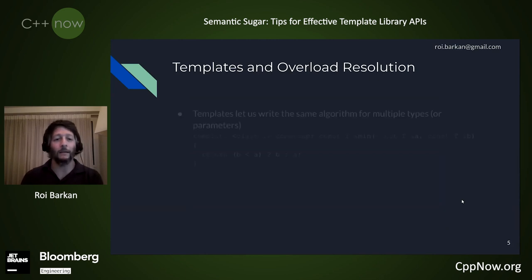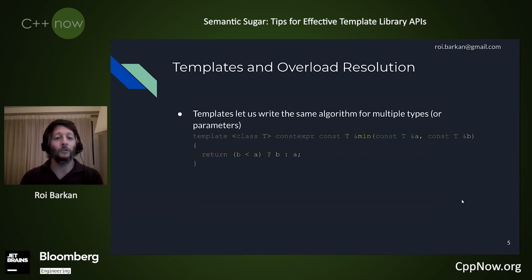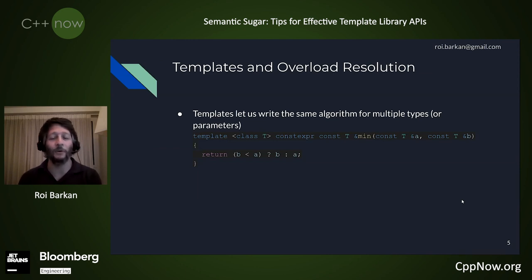The thing has a lot to do with templates and overload resolution. Templates, as we all know, are a way to write a single piece of code to implement an algorithm across many different types. Here's a very simple algorithm called min, which looks for the minimum of two objects. It's templated on T — very simple, everyone knows it.